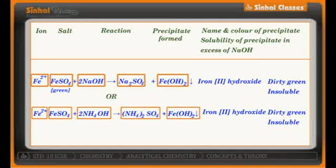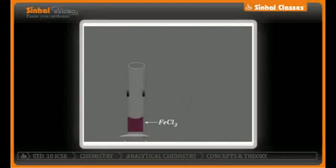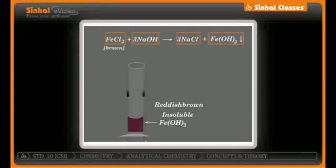The third example is ferric chloride FeCl₃. When FeCl₃ is treated with sodium hydroxide you get NaCl and ferric hydroxide Fe(OH)₃ — again a precipitate indicated by a downward arrow. This precipitate is reddish brown in color and is also insoluble in excess sodium hydroxide. The equation is balanced by putting 3 in front of NaOH and 3 in front of NaCl.